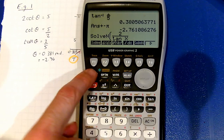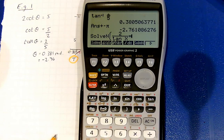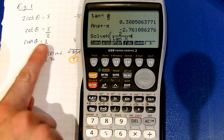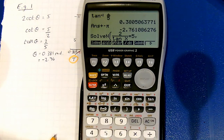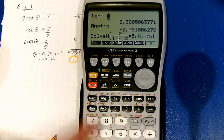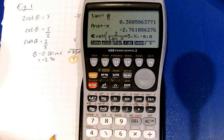Then we do shift decimal point to give us equals, and then we want 5. Comma, what's the variable called? We've called it x. And what's our range of values? Negative pi, and our maximum value is pi. And then we execute, and wait for a moment.